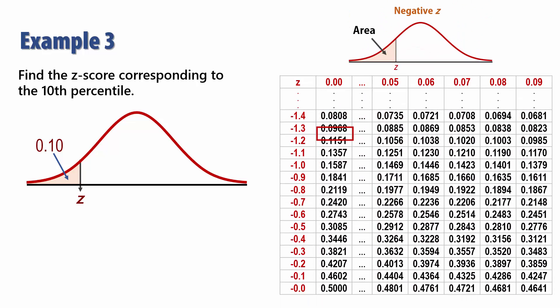The closest area to 0.10 we can find on the table is 0.1003, and that corresponds to a Z score of negative 1.28. So the Z score corresponding to the 10th percentile is negative 1.28.